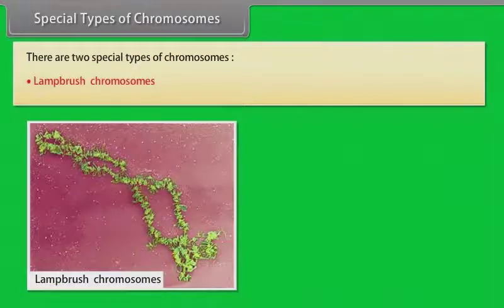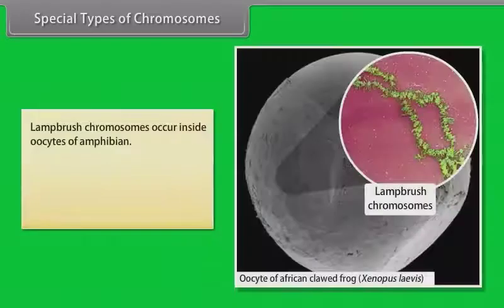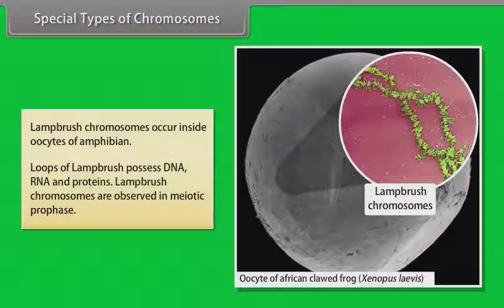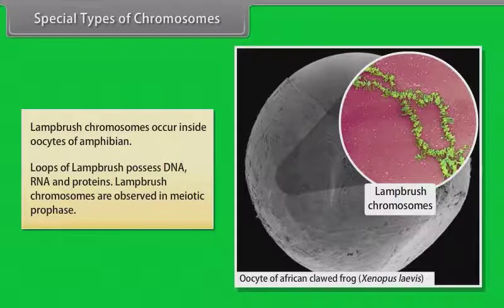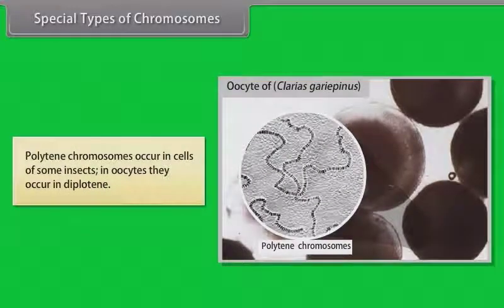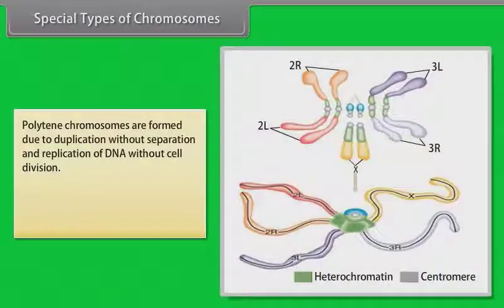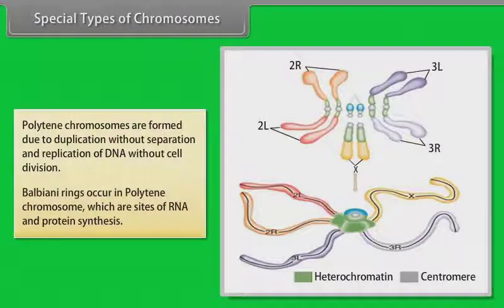Special types of chromosomes. There are two special types: lampbrush chromosomes and polytene chromosomes. Lampbrush chromosomes occur inside oocytes of amphibians. Loops of lampbrush chromosomes possess DNA, RNA and proteins, and are observed in meiotic prophase. Polytene chromosomes occur in cells of some insects; in oocytes they occur in diplotene. Polytene chromosomes are formed due to duplication without separation and replication of DNA without cell division. Balbiani rings occur in polytene chromosomes, which are sites of RNA and protein synthesis.